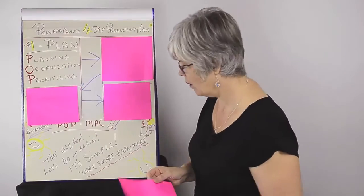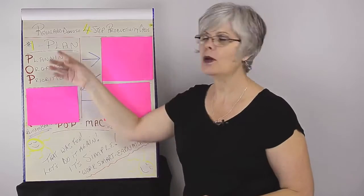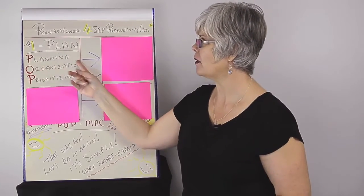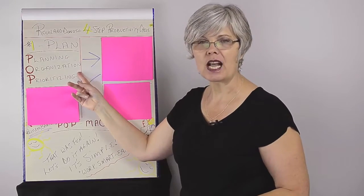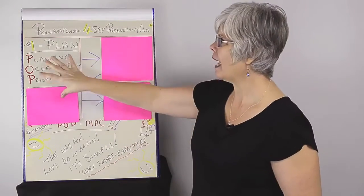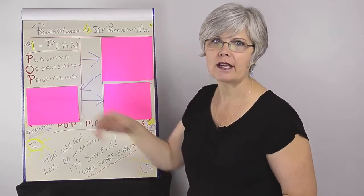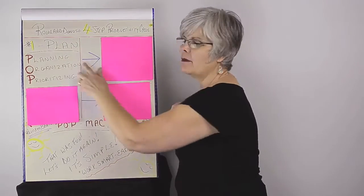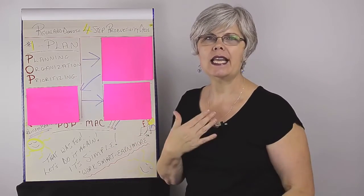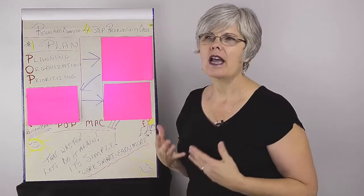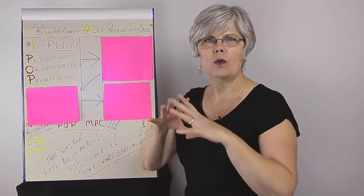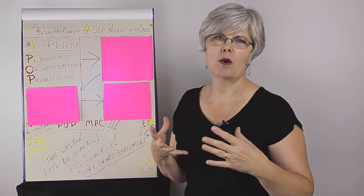Step one is to plan and you'll see I've got POP here. Planning is about breaking down what the planning is, the organizational aspect of it, but also the prioritization. You can't spend too little time in this area. If you don't take the time to do the planning properly, you're going to be racing ahead and you won't know what your next steps are. The best way to figure that out is to take the time to know what the big picture is and then breaking it down.